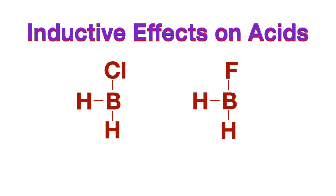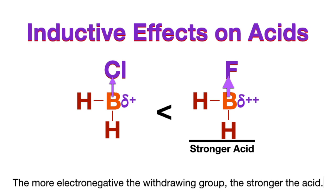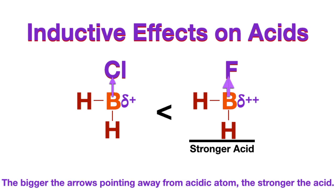In these two compounds where boron is again the acidic atom, the left side has a chlorine attached to it and the right side has a fluorine attached to it. Fluorine is more electronegative than chlorine, which would create a greater withdrawing effect, making the boron on the right side with the fluorine even more partially positively charged than the boron on the left side, making it a stronger acid. So the more electronegative a withdrawing group is, the stronger the acid. Or just see it as the bigger the arrow that points away from the acidic atom, the stronger the acid.